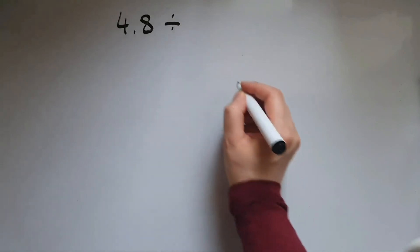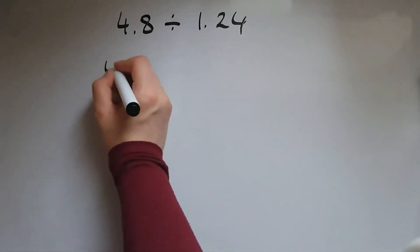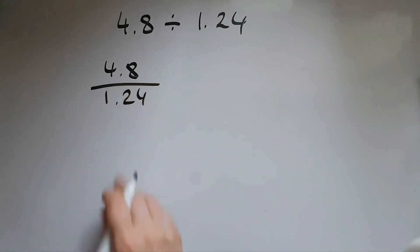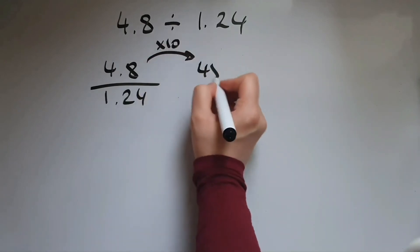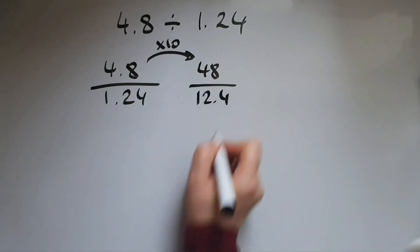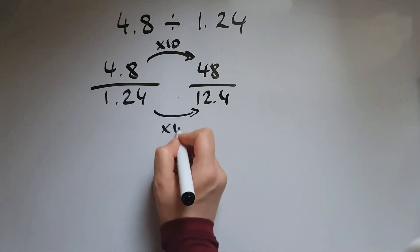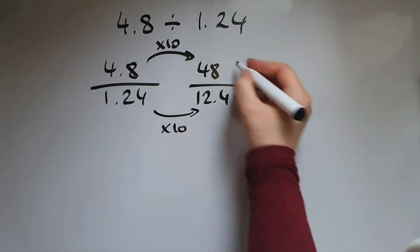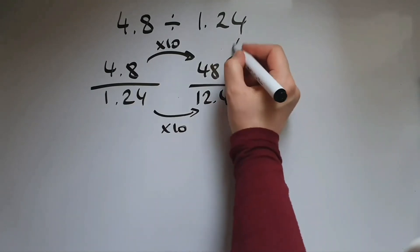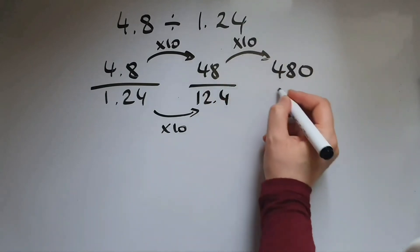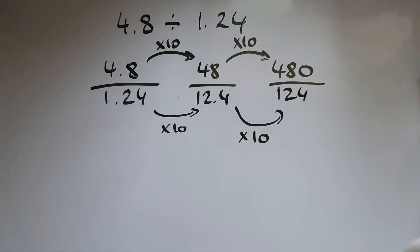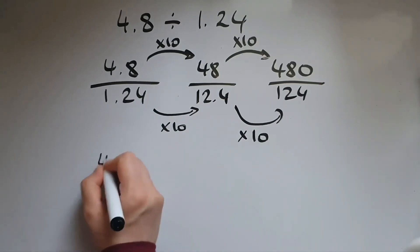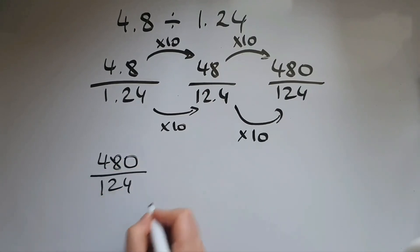Let's try an example with two decimal places: 4.8 divided by 1.24. We convert this into a fraction. To get rid of the decimal points we multiply by 10, giving us 48 over 12.4. We still have a decimal point, so we multiply by 10 again — even though 48 is now a whole number — giving us 480 over 124.